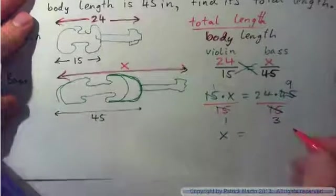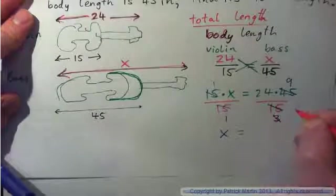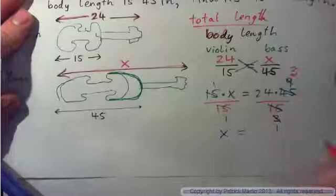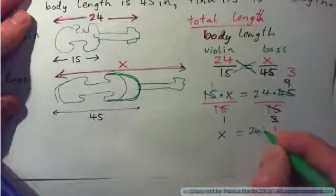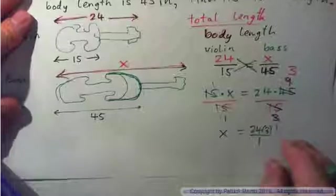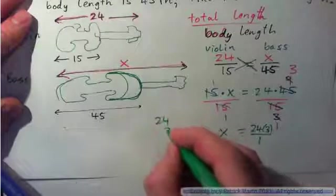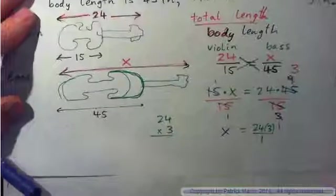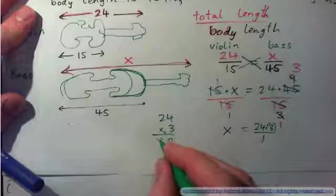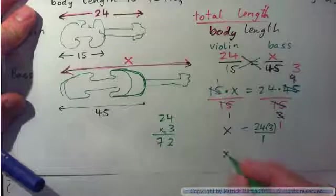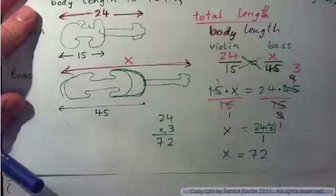And look, 3 goes into 9. 3 into 3 goes once. 3 into 9 goes 3 times. So what I have is 24 times 3 over 1. So I just need to multiply 24 times 3, and I have the answer, right? 3 times 4 is 12, carry the 1. 3 times 2 is 6, and 1 is 7. So I have x equals 72.